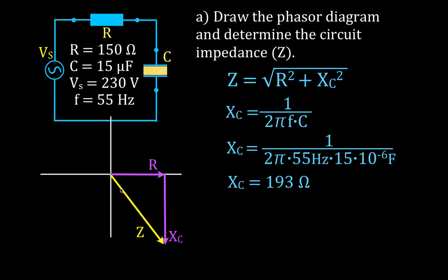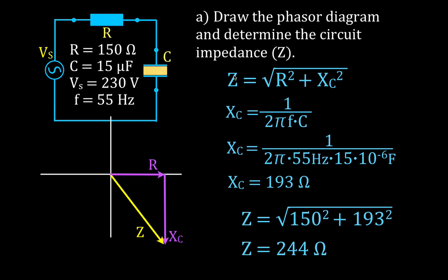The length of the impedance vector represents its magnitude. We have a right triangle, so we use the Pythagorean theorem: Z equals the square root of R squared plus Xc squared. Plugging in the values: the square root of 150 squared plus 193 squared gives us an impedance of 244 ohms. This is the mathematical solution, and the phasor diagram is its graphical representation — with 150 ohms along the x-axis and 193 ohms along the y-axis.